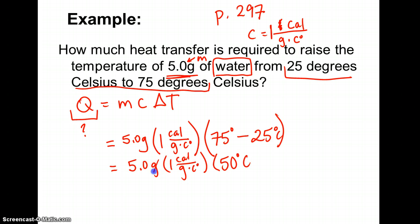You notice that these cancel out these units. It works out that my answer is 250 calories is what it takes to increase the heat of 5 grams of water from 25 degrees Celsius to 75. So Q equals this. Literally just plugging in the numbers.